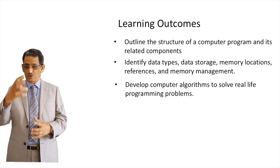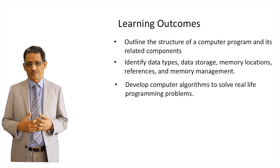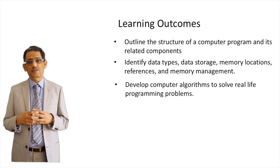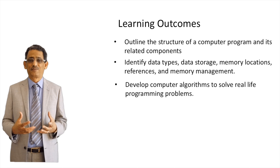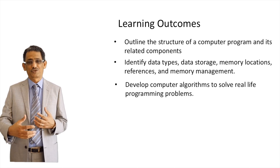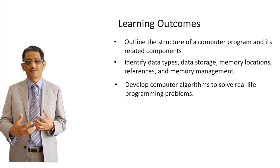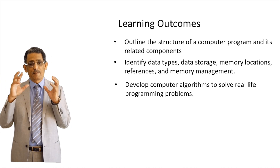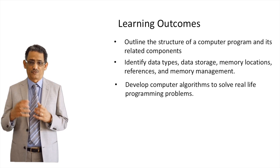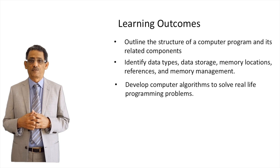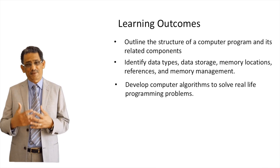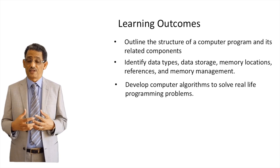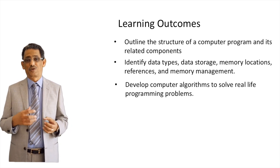Now that we have an idea of data types and program structure, we need to start writing solutions using algorithms. Algorithm sounds complicated, but it's basically a description of a solution in human language. For example, how you make a cup of tea — there's a sequence to follow and components you need. Similarly, calculating a student's GPA is an algorithm. You then convert that algorithm into a computer program.